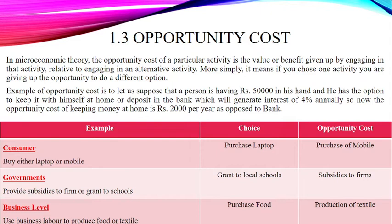For example, if you are going outside and you have two options — you can have tea or you can have coffee — and you prefer coffee, then tea would be your opportunity cost. When you make a choice and prefer coffee, tea becomes your opportunity cost.